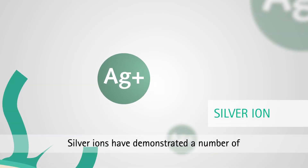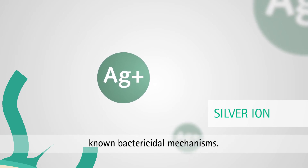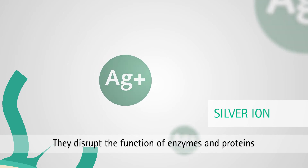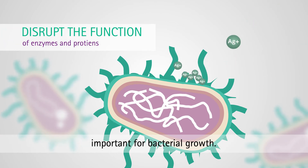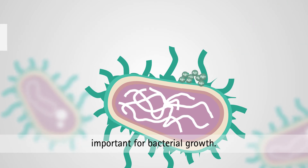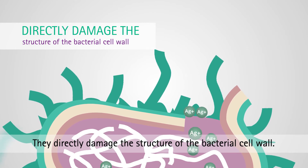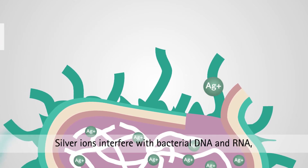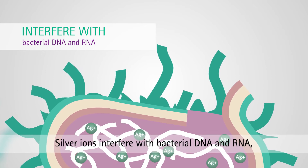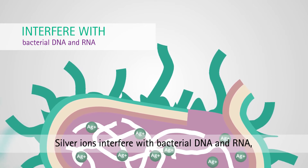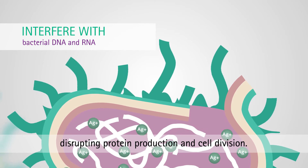Silver ions have demonstrated a number of known bactericidal mechanisms. They disrupt the function of enzymes and proteins important for bacterial growth, and they directly damage the structure of the bacterial cell wall. Silver ions also interfere with bacterial DNA and RNA, disrupting protein production and cell division.